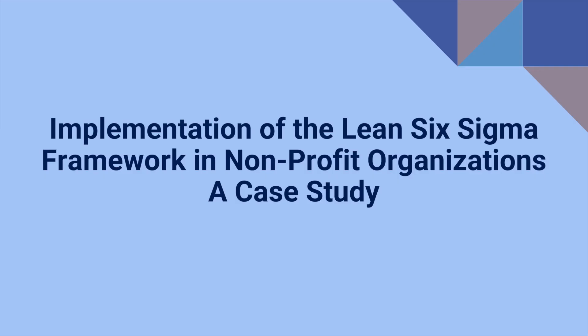Implementation of the Lean Six Sigma framework in nonprofit organizations: a case study. Lean Six Sigma is based on the concepts of just-in-time and automation. It aims to eliminate process waste, shorten production time, increase process efficiency, and satisfy customer needs using DMAIC. In this presentation, we will examine how through the use of Lean Six Sigma tools and techniques, nonprofit organizations are able to increase their resource management efficiency.